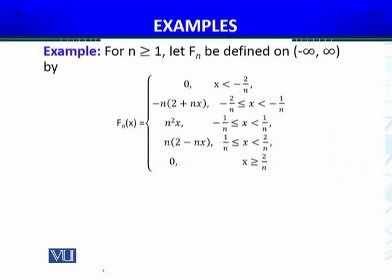The first example: for n greater than or equal to 1, let fn be the sequence of functions defined on the set of real numbers (minus infinity to infinity) by a piecewise formula. Let's say if n equals 1, then f1(x) is defined piecewise. We will use a graph to understand what is happening and determine whether pointwise convergence holds.